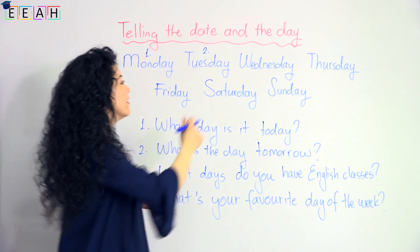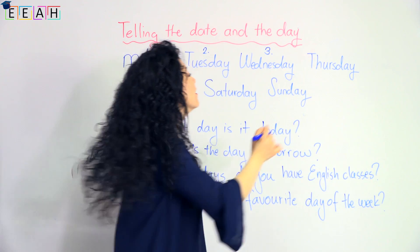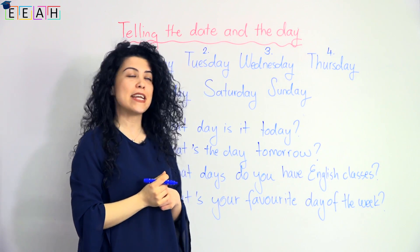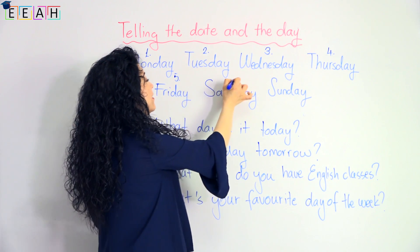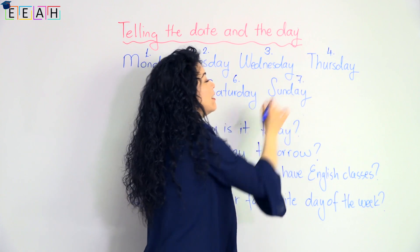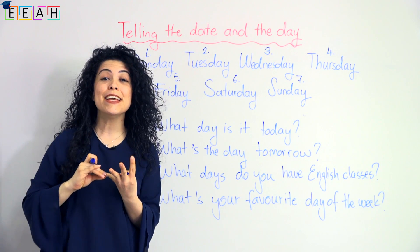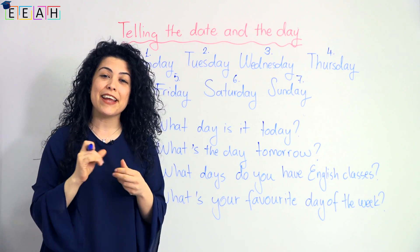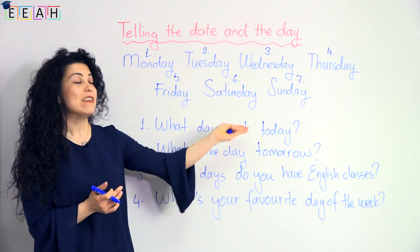The first day of the week is Monday. The second day is Tuesday. The third day is Wednesday. The fourth one is Thursday. Then we have Friday and Saturday.